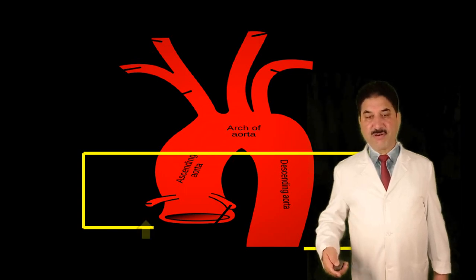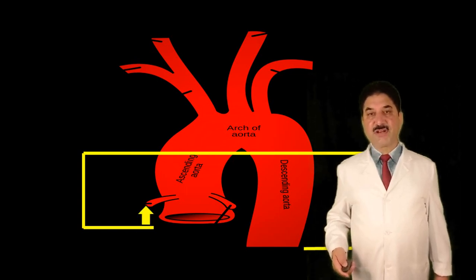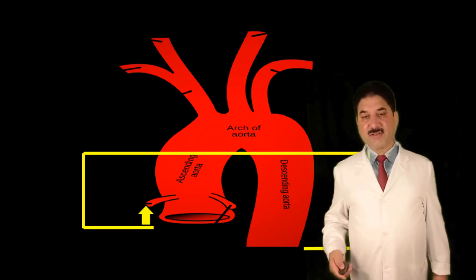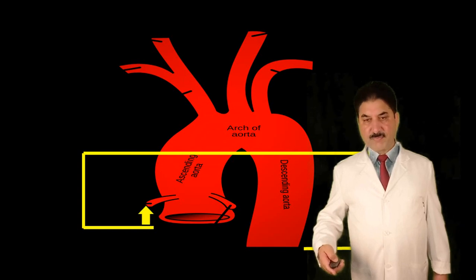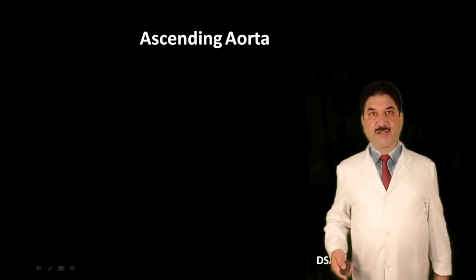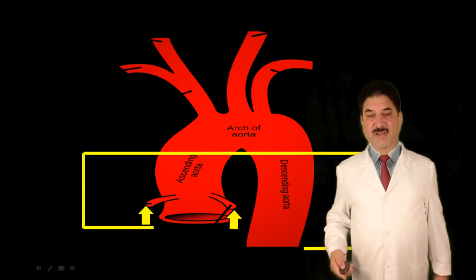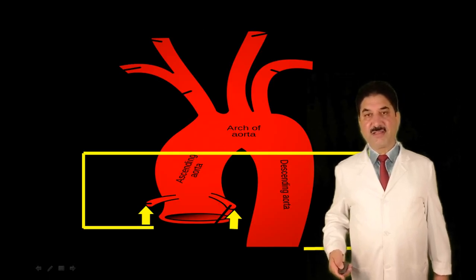From aortic sinuses arise the coronary arteries. From the arch of aorta arise the right brachiocephalic trunk, left common carotid, and left subclavian artery.